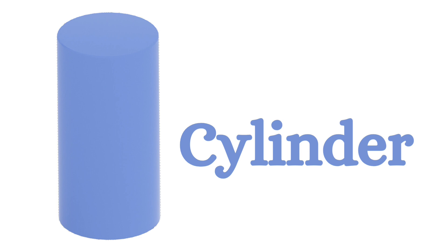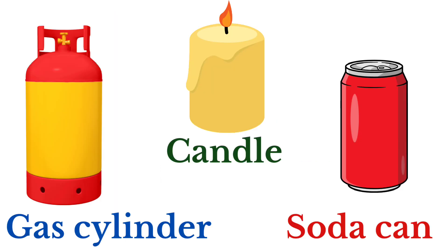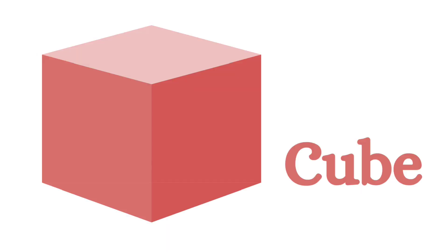Next shape is cylinder. This is the shape of a cylinder. Let us see some few examples of cylinder: gas cylinder, candle, soda can. These shapes look like a cylinder. These are the few examples for the shape cylinder.